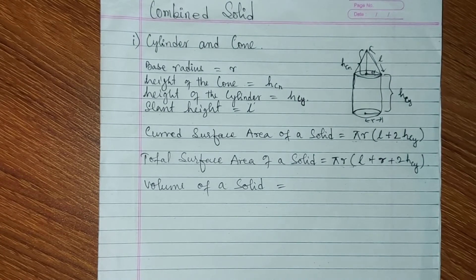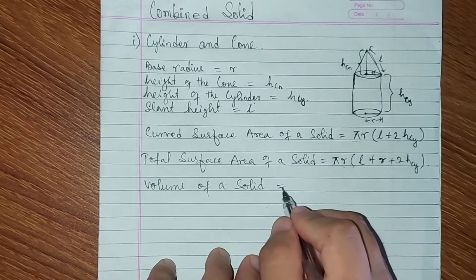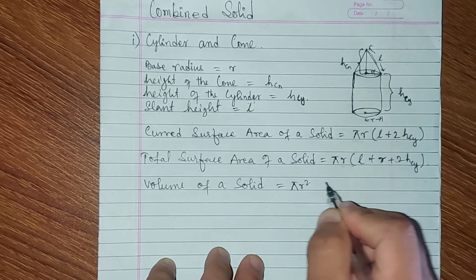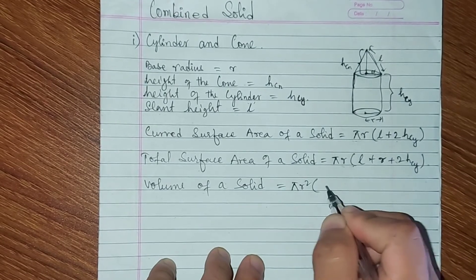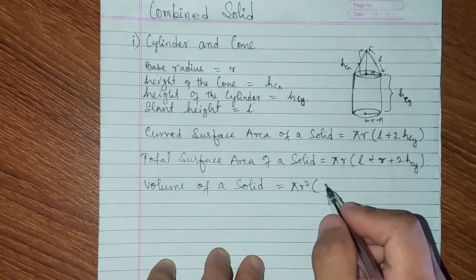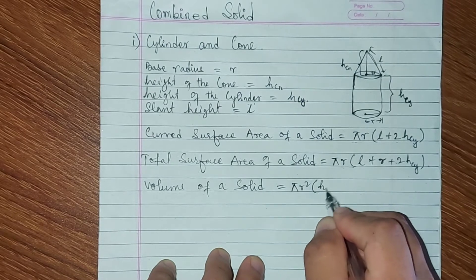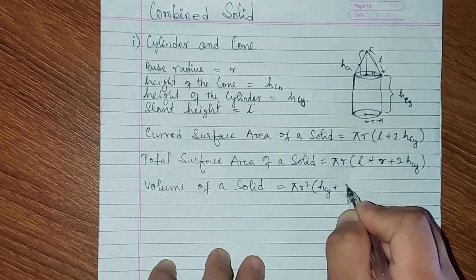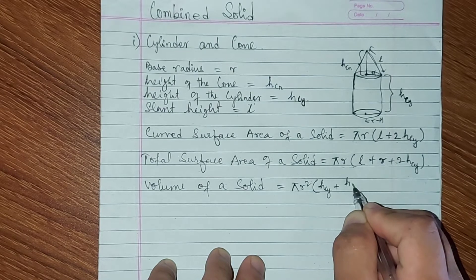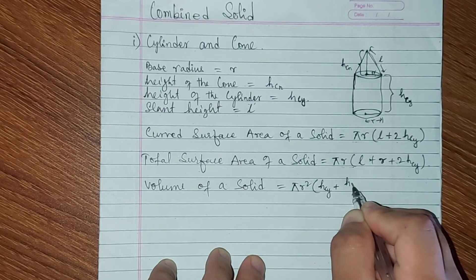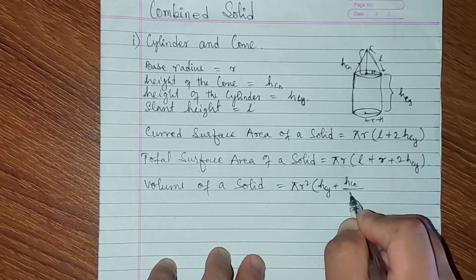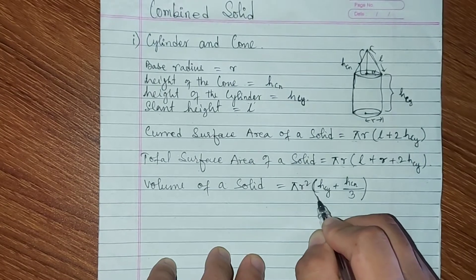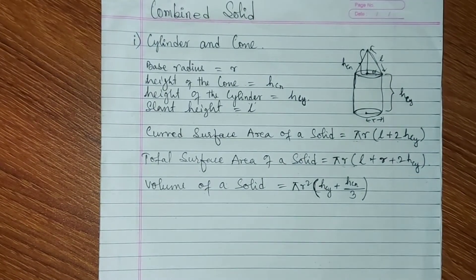Volume of the solid: V = πr² into (h_cy + h_cone/3) — combining the cylinder volume πr²h_cy and the cone volume 1/3 πr²h_cone.